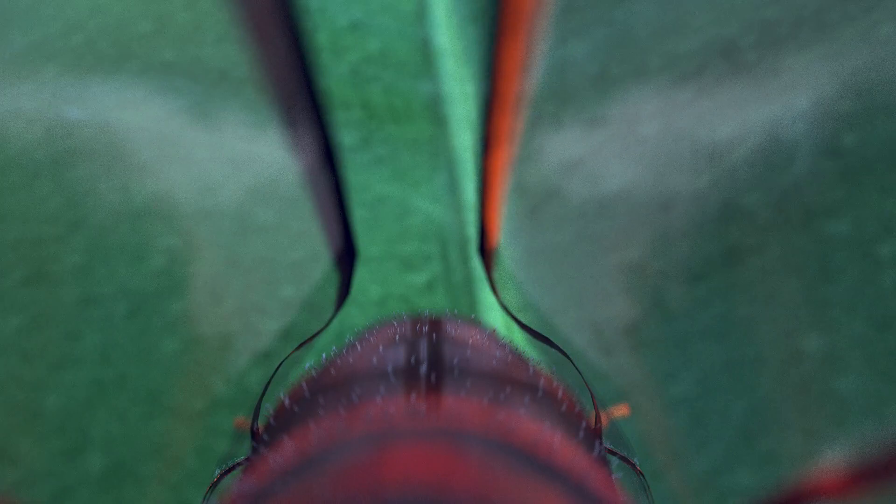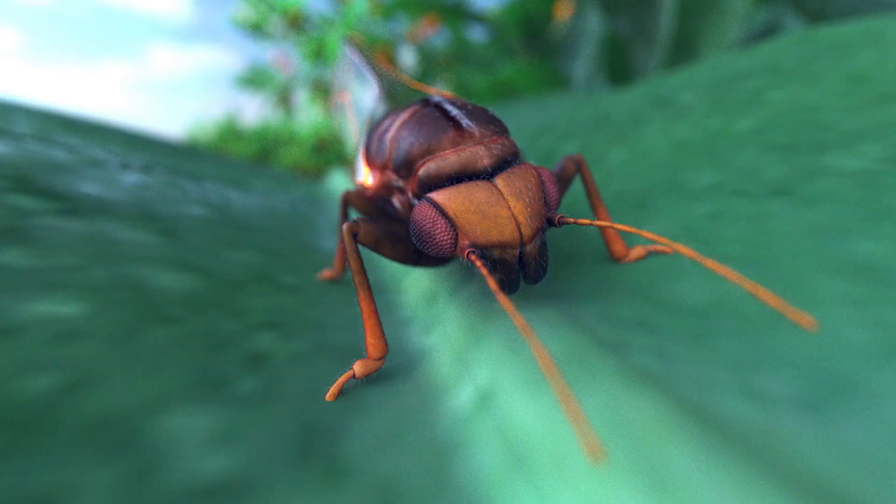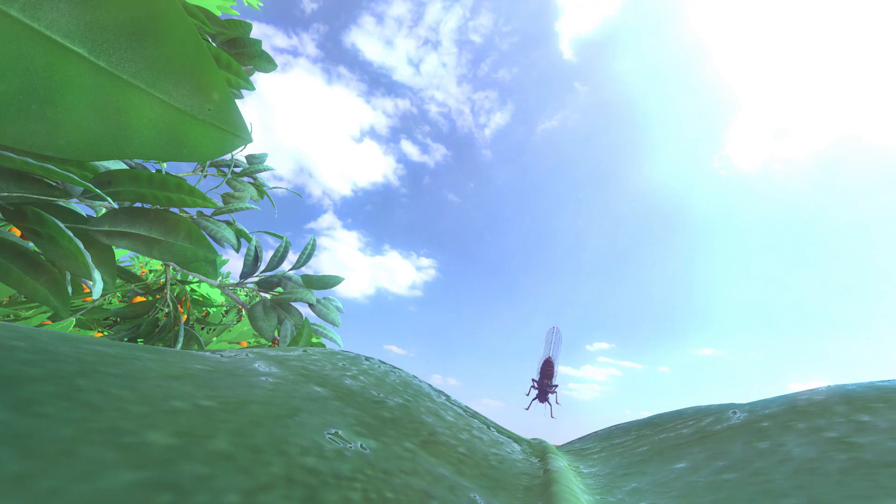It spreads via the xylem. When a psyllid attacks the tree, its proboscis first reaches the xylem. Thanks to Sivanto, the psyllid stops sucking and flies away.